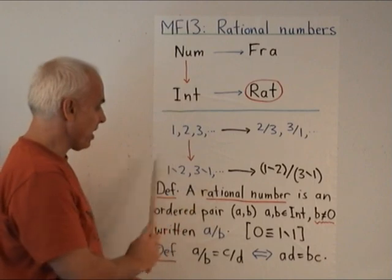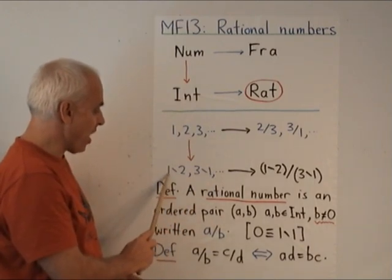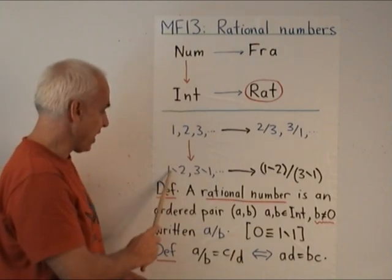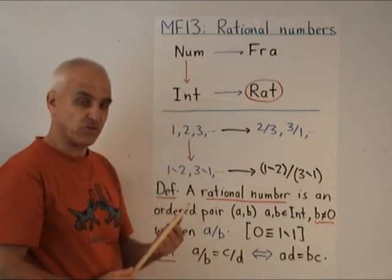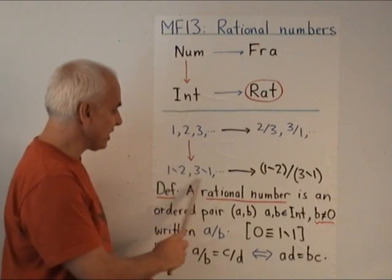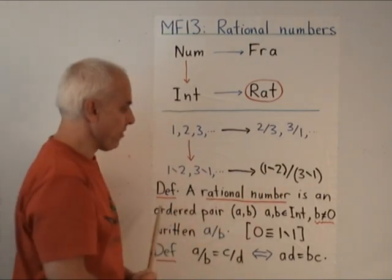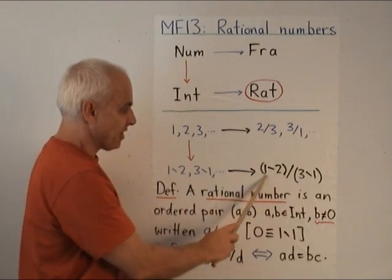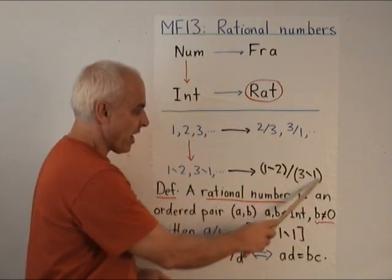By integer, I mean an expression of the form 1 less 2, or 3 less 1, where again 1 and 2, 3 and 1 are natural numbers. What we're going to do is use these integers to form rational numbers, and a rational number is just going to be an integer over another integer.